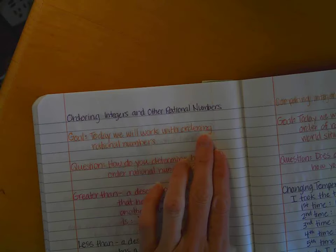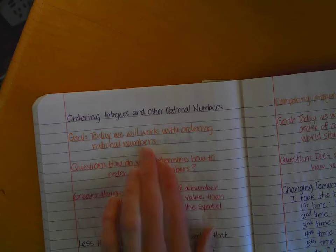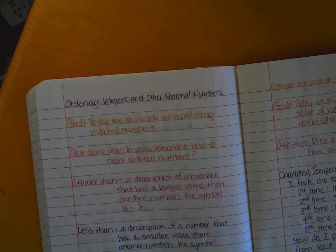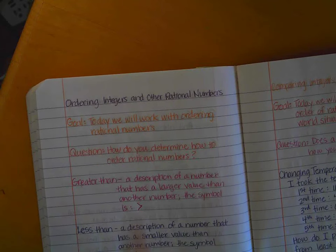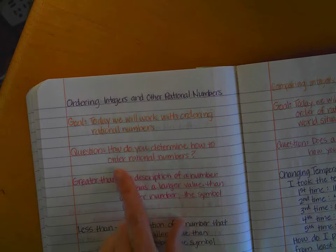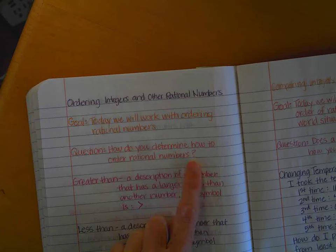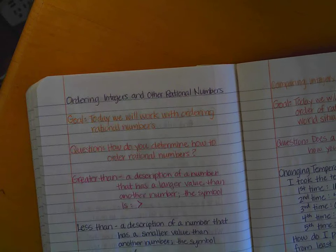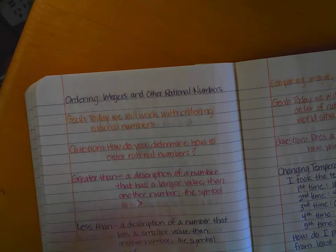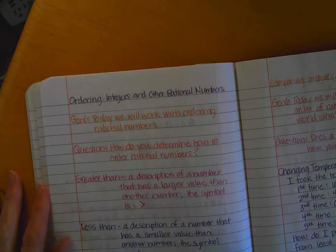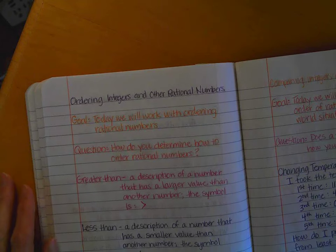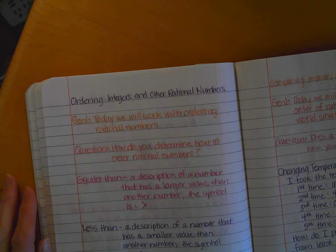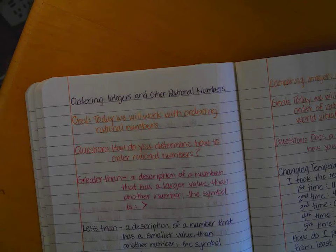I'll throw up some practice problems on the board for this lesson when we get to it. So that's all I have for you today. Let's go back to this again. Today we will work with ordering rational numbers. Ordering tells us greater than or less than, so that's pretty good. How do you determine how to order rational numbers? Still thinking on that one. See if you come up with a good answer with it. And hopefully this makes sense to you. So ordering integers and other rational numbers. That's it, my dears. I'll see you tomorrow. Bye!